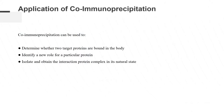First, we'll introduce co-immunoprecipitation. It's a classic method based on the specificity of antigen-antibody interactions. Co-immunoprecipitation can be used to detect the interaction between two known proteins, or use known proteins to find unknown proteins that interact with them. Co-immunoprecipitation experiments can be used to determine whether two target proteins are bound in the body, identify a new role for a particular protein, or isolate and obtain the interaction protein complex in its natural state.